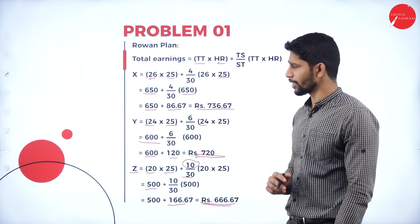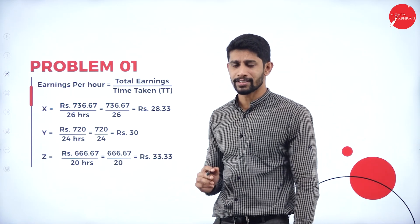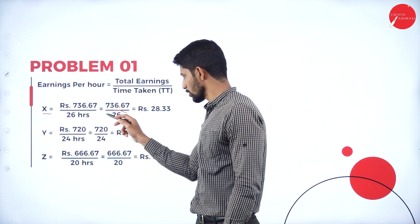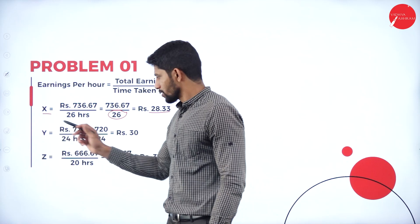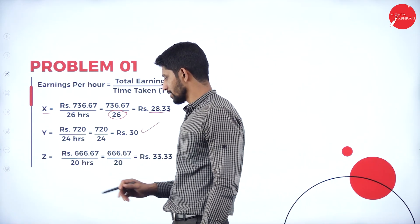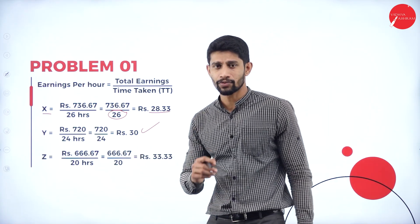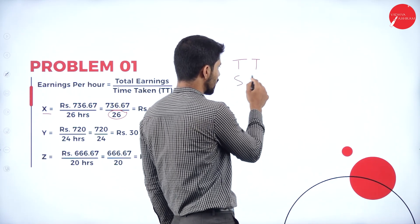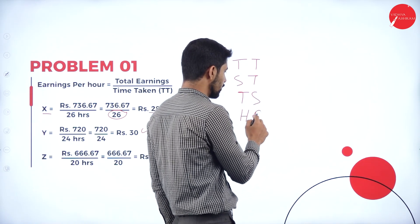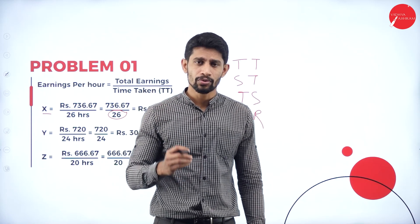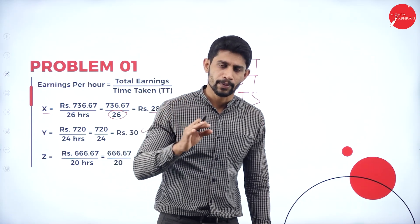Now we find out earning per hour under Rowan Plan. Formula is same: total earnings divided by time taken. Mr. X: 736.67 ÷ 26 = 28.33 rupees per hour. Mr. Y: 720 ÷ 24 = 30 rupees per hour. Mr. Z: 666.67 ÷ 20 = 33.33 rupees per hour. You mainly need to know four things: time taken, standard time, time saved, and hourly rate — and the formula for each plan.